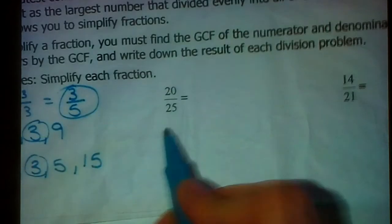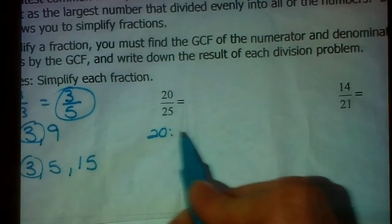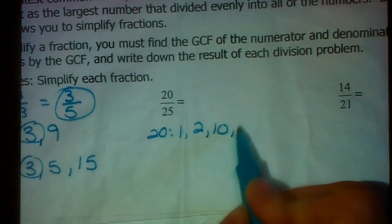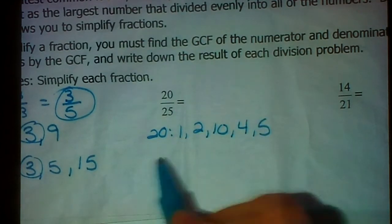How about 20 over 25? What goes into 20? 1, 2, 10, 4, 5. Notice they're not in order.